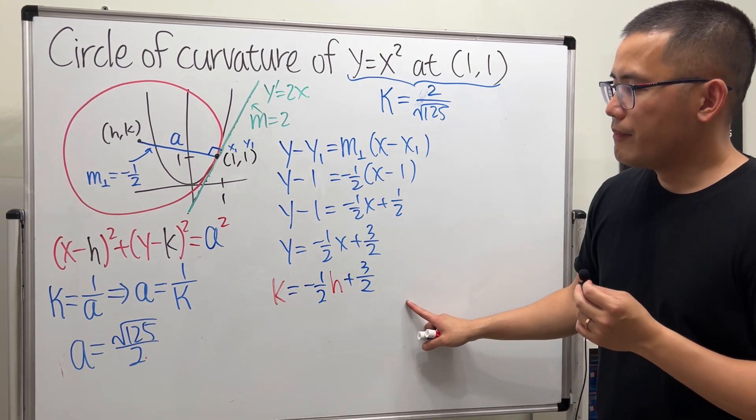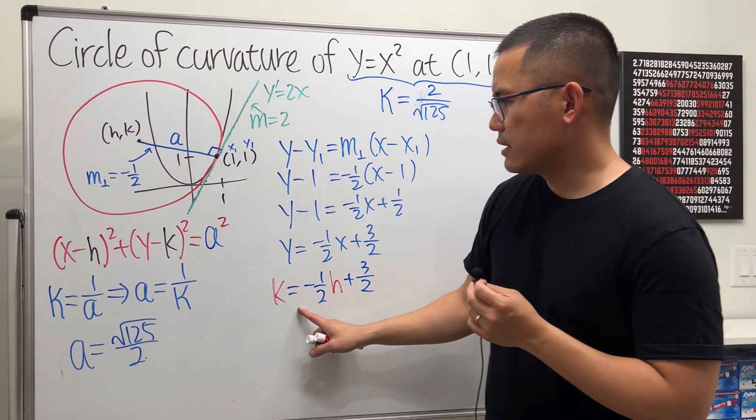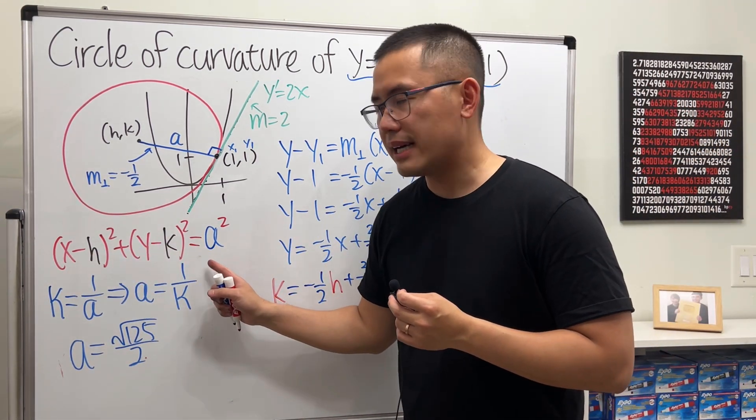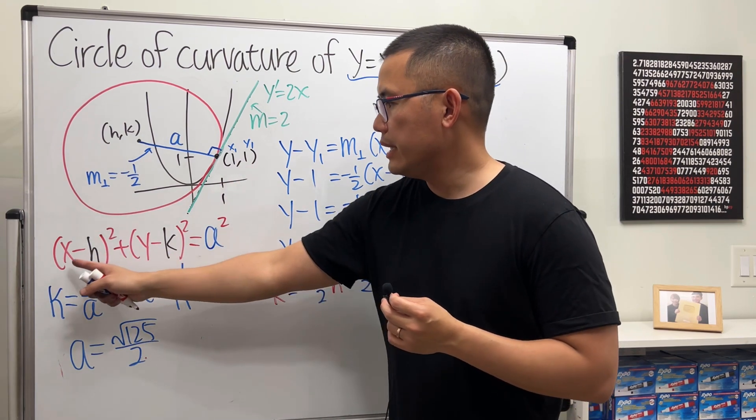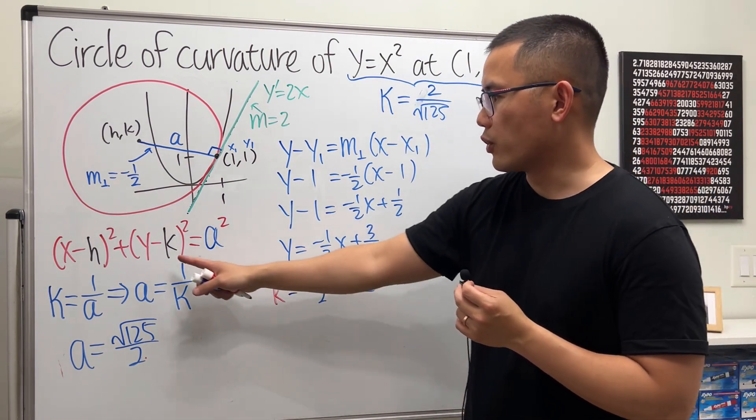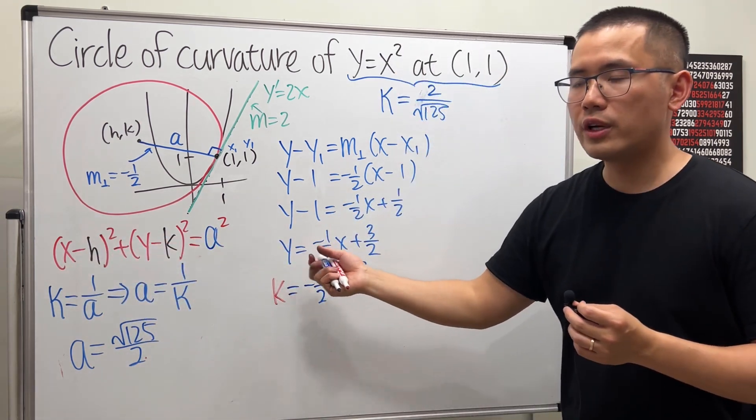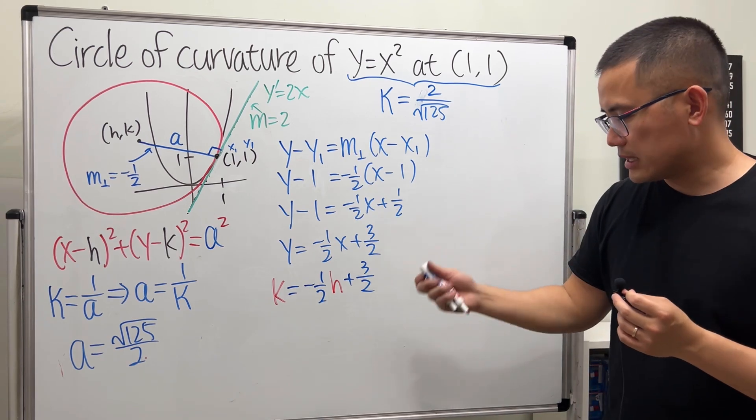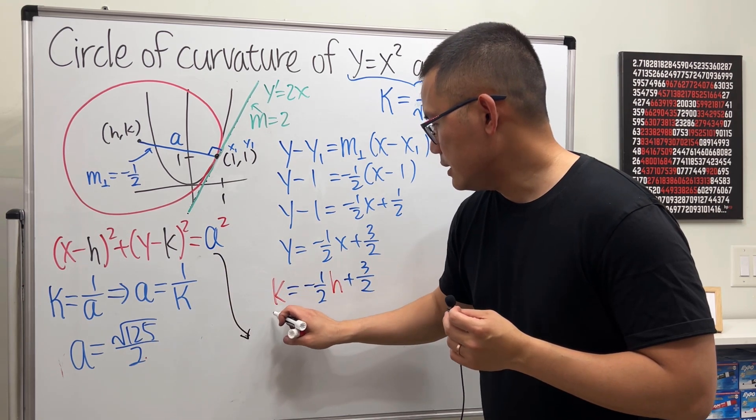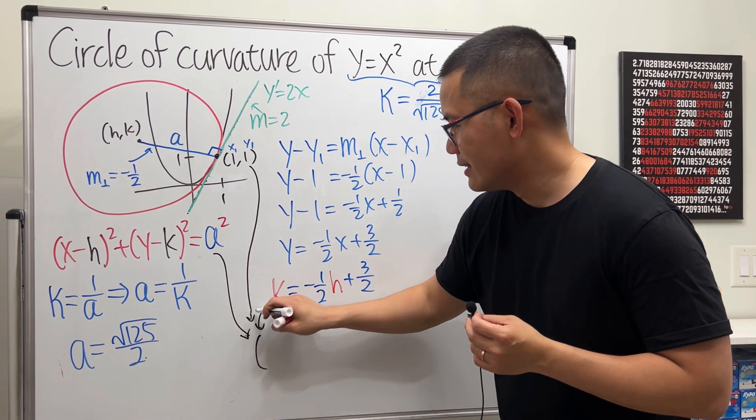Now, again, our goal is to figure out h and also k. We will have to connect this equation and that equation together though. Well, the circle has the point (1,1). So we can put 1 and 1 into x and y. And now we can also put this right here for k. And then we also know the a is this. So with that being said, we can get an equation in terms of just h. So let's go ahead and get to work. So I will say this and that we will end up with and also this, all three things together.